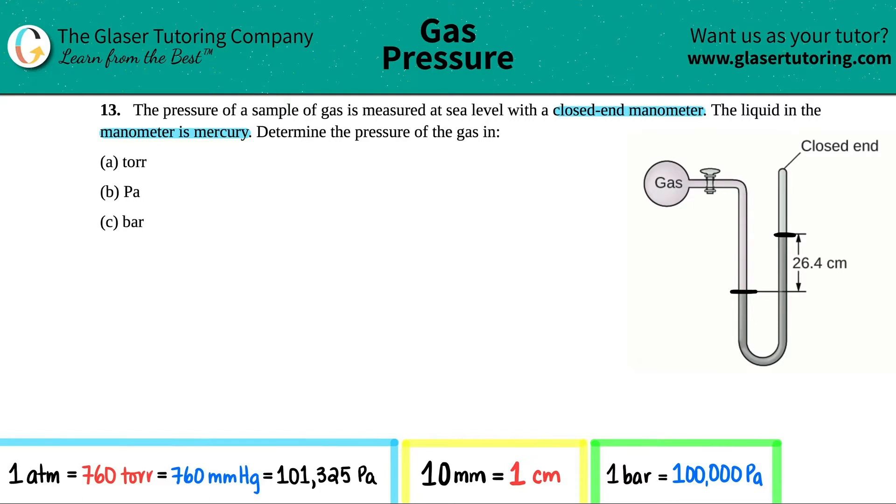The pressure is the difference between these two, or basically the height of this. They told us it was 26.4 centimeters. So we know we have 26.4 centimeters and they told us the manometer was in mercury, which is Hg on the periodic table.